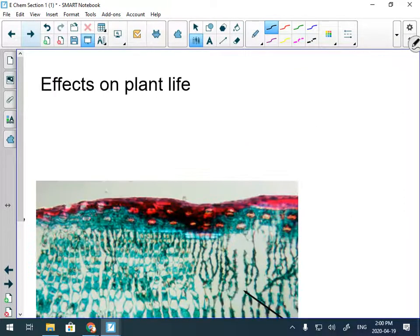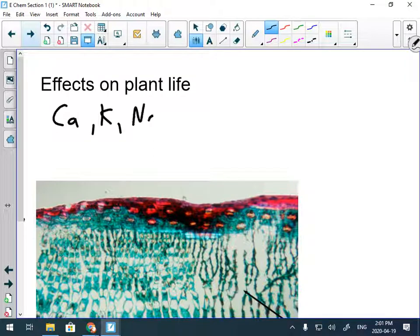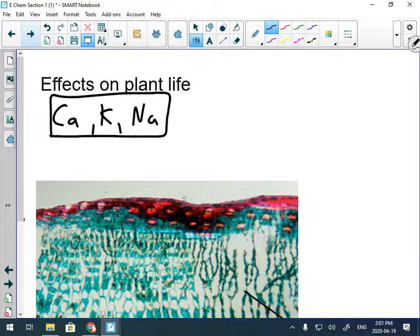Acid rain also affects plant life. Now I'm not going to get too technical with this, but what acid rain does is it removes things like calcium and potassium and sodium from the soil. These all are required for plant growth. So these are removed, and then you have plant growth stunted.